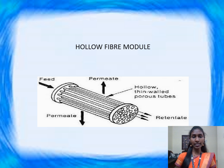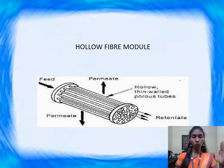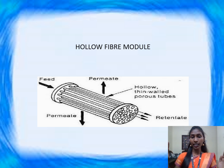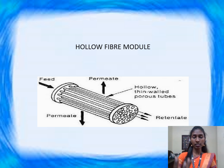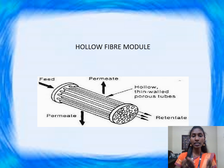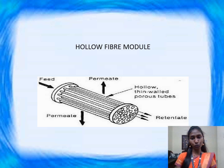Another one is the hollow fiber module. Here the feed is applied at one end and the retentate is collected at the other end, while the permeate is collected at the center of the membrane through thin-walled porous tubes.